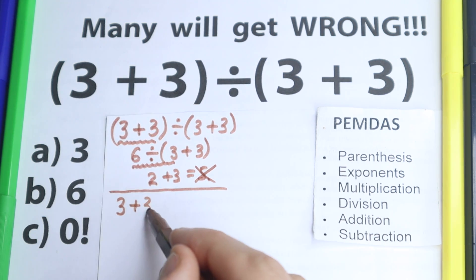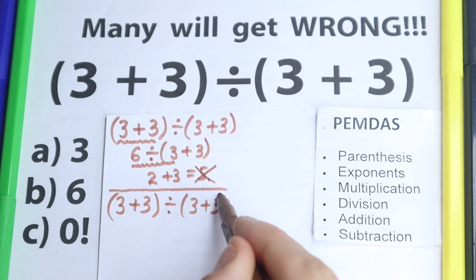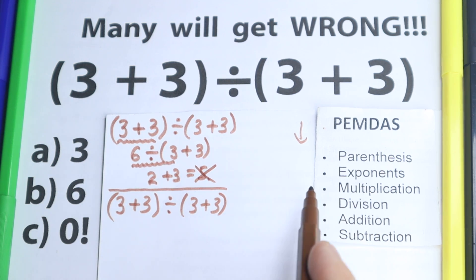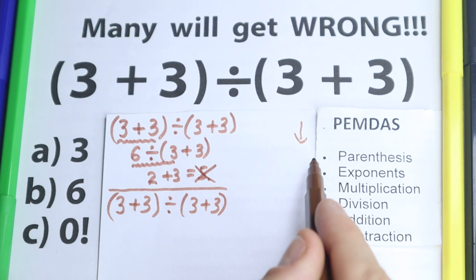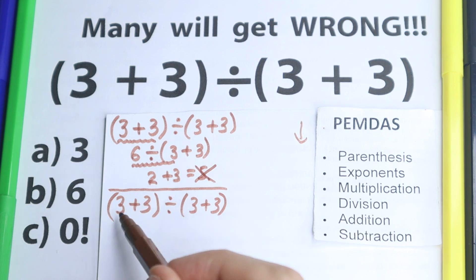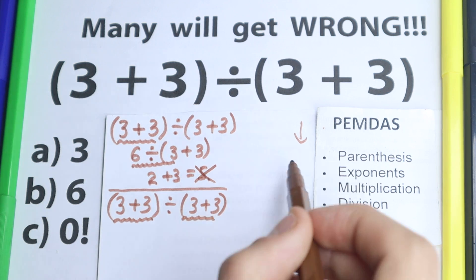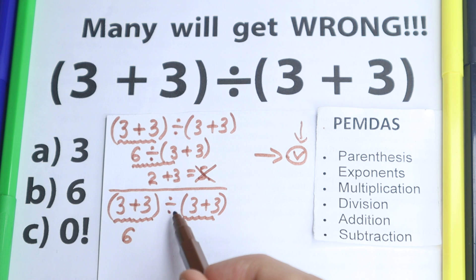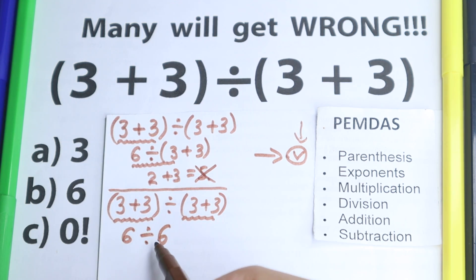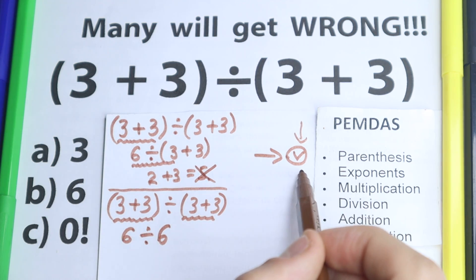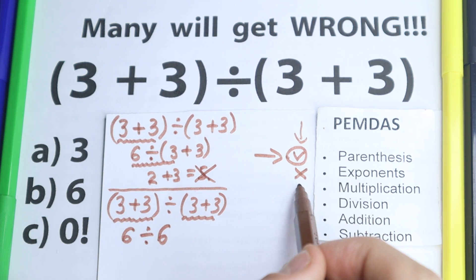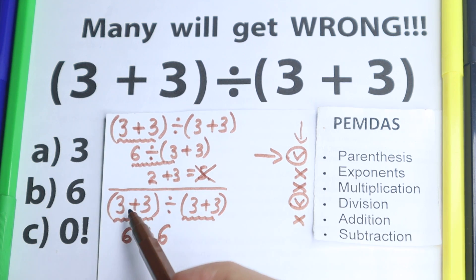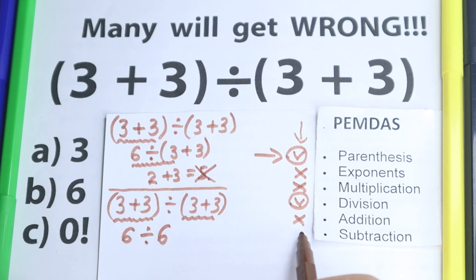Let's solve it according to PEMDAS. We have (3 plus 3) divided by (3 plus 3). PEMDAS works from the top to the bottom. The first step is parentheses — and we have parentheses in two places here. So we start with the parentheses: 3 plus 3 equals 6, and 3 plus 3 equals 6, giving us 6 divided by 6. We don't have any exponents, multiplication, addition, or subtraction remaining — only division.